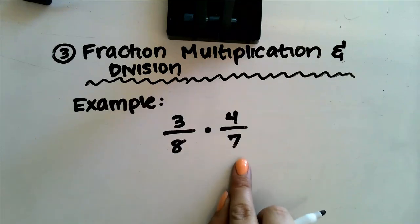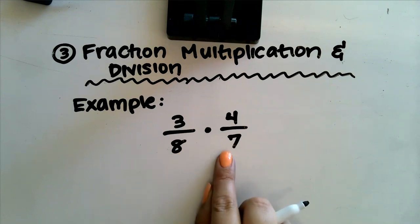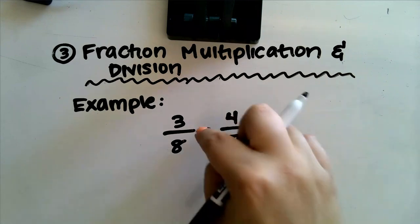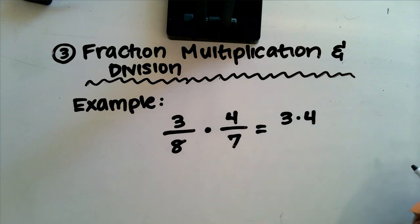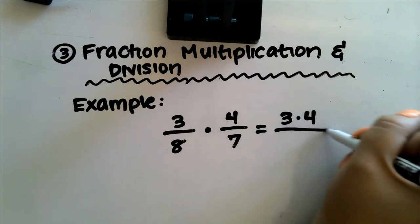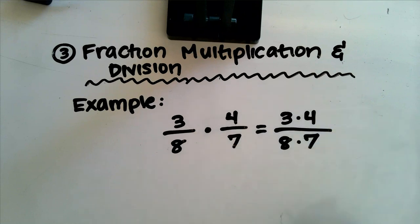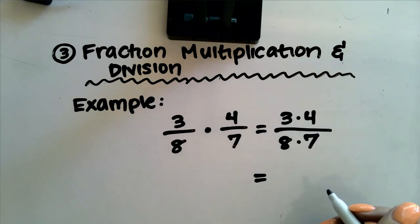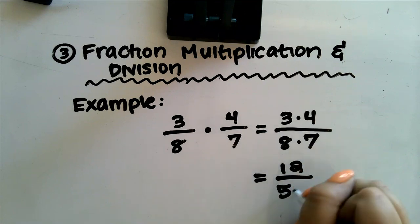Okay, we now have an example where we're going to be multiplying 3 eighths times 4 sevenths. Remember, whenever we're multiplying fractions, all we have to do is multiply straight across. In our numerator, we're multiplying 3 times 4. In our denominator, we're multiplying 8 times 7. Therefore, our fraction is going to equal 12 over 56.